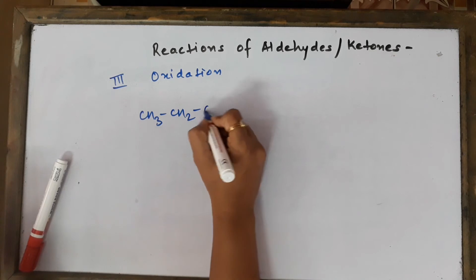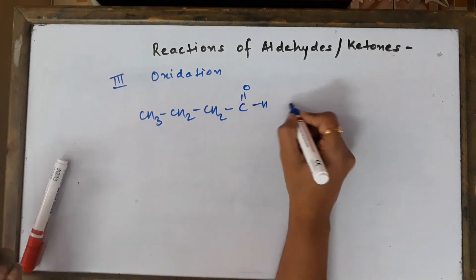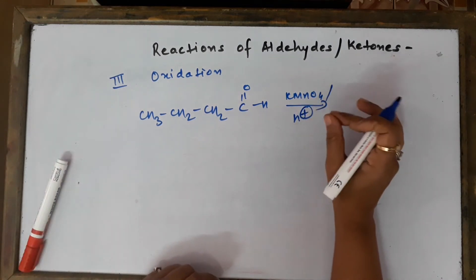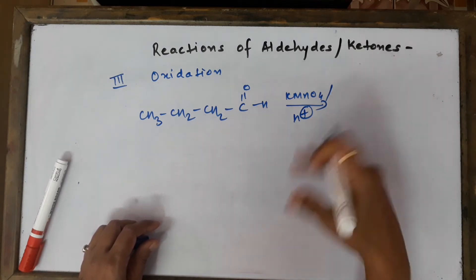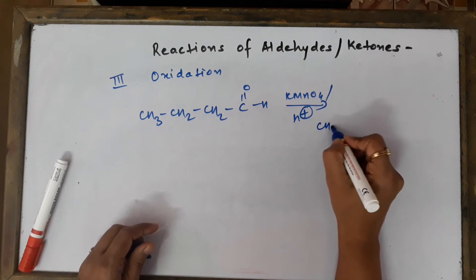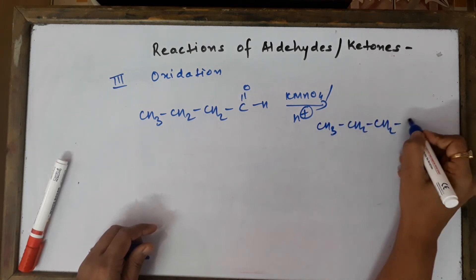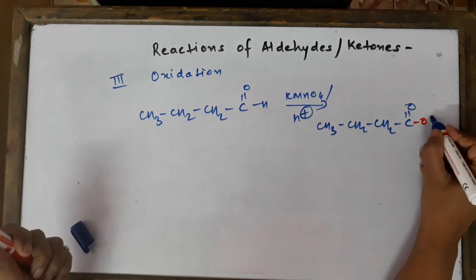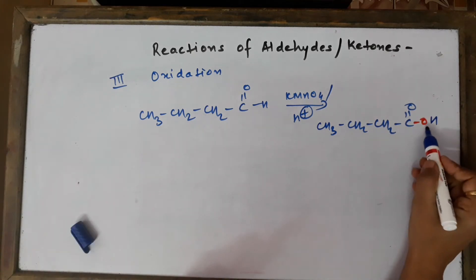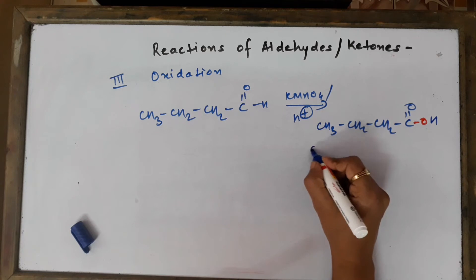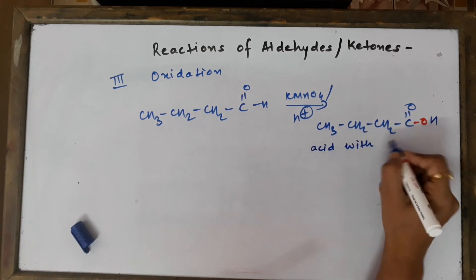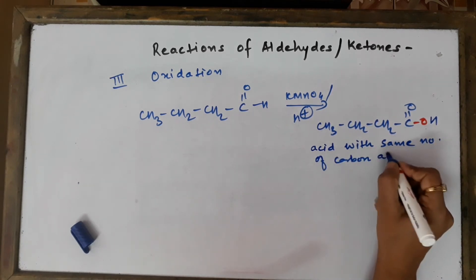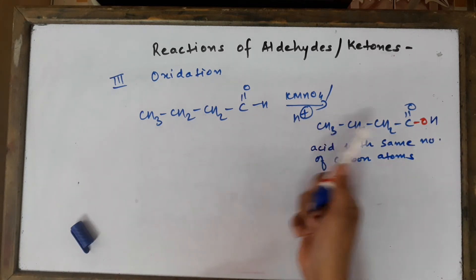Let's take a specific example: CH₃CH₂CH₂CHO (butanal). When oxidized by heating with acidified potassium permanganate — a purple-violet compound — the result is simply a carboxylic acid with the same number of carbon atoms as the parent compound. Starting with four carbon atoms, we end with four carbon atoms — there is no loss of carbon atoms in aldehyde oxidation.